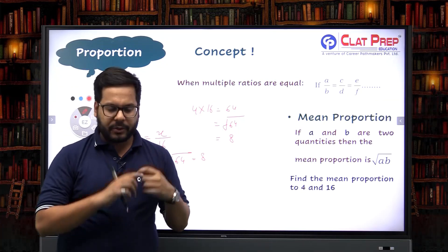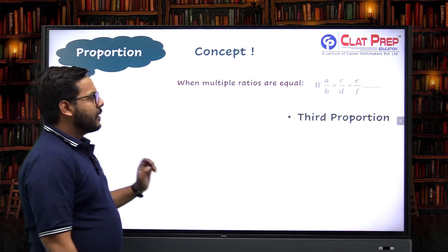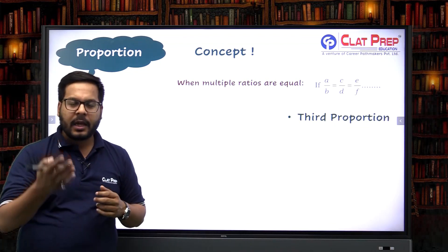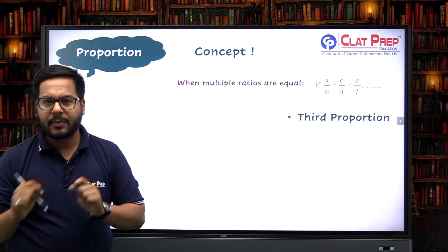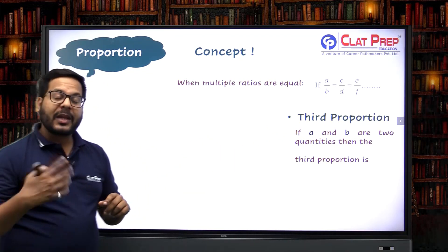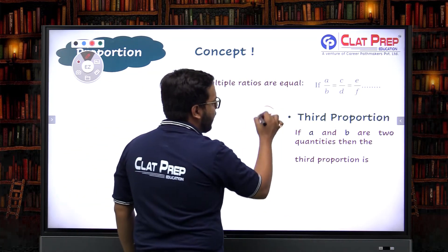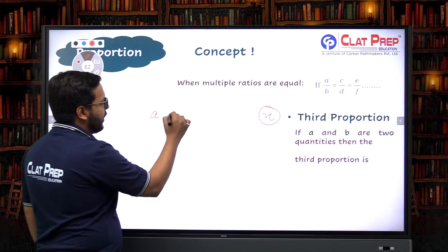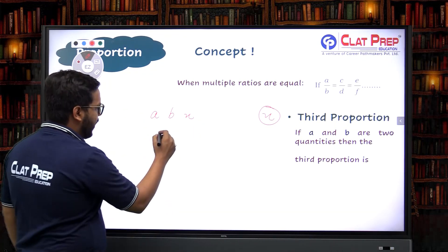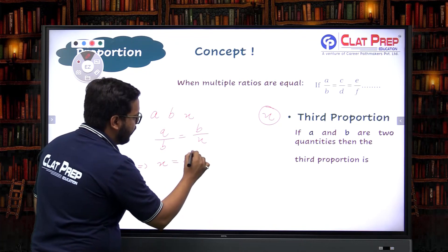This was the first aspect of continued proportion — mean proportion. The second aspect is third proportion. If two quantities A and B are given, the third proportion is inserted after B, making the series A, B, X. For all three to be in proportion, A/B must equal B/X. Simplifying: X = B²/A. So the third proportion to A and B is B squared divided by A.